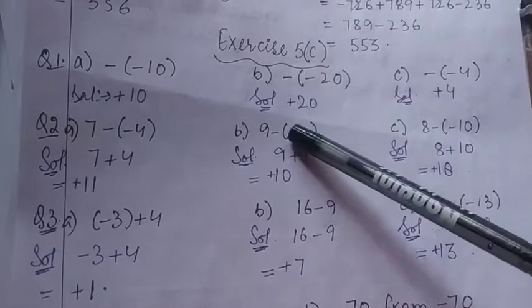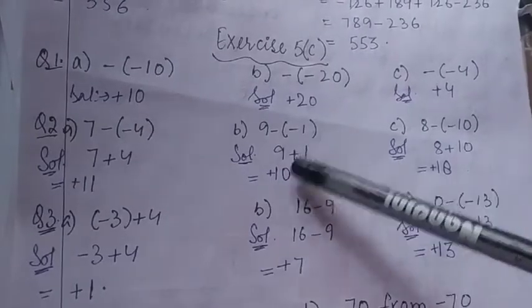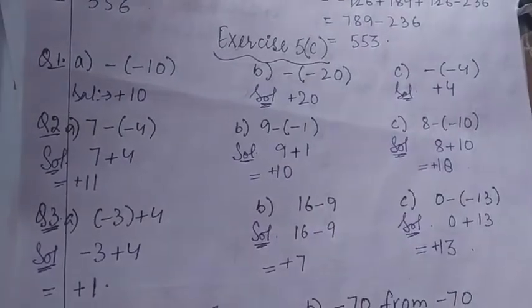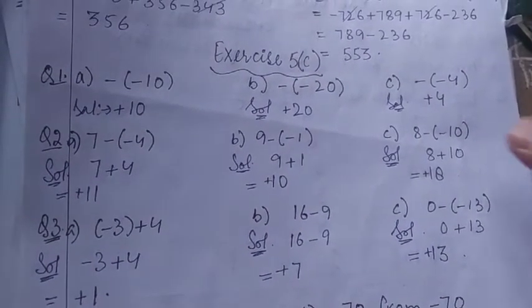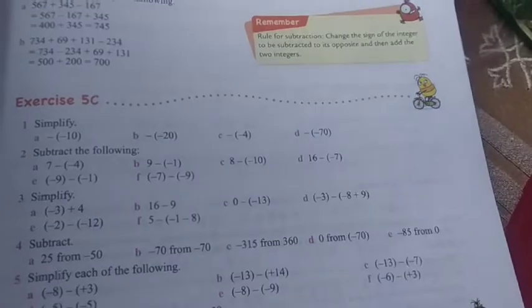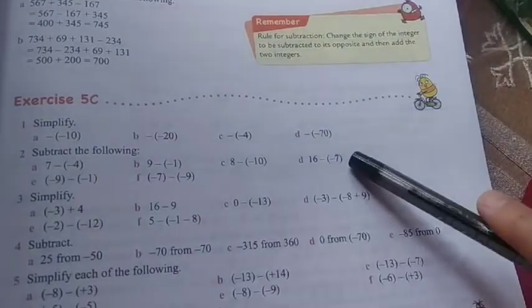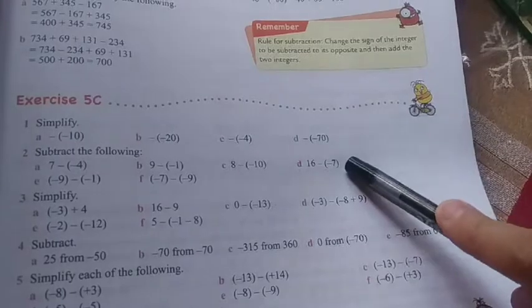Similarly here, 9 minus minus 1. That means 9 plus 1. That will be 10. Third part is 8 minus minus 10. That will be 8 plus 10. So it will be 18. Similarly, here it is 16 minus minus 7. It means 16 plus 7. So that will be 23.